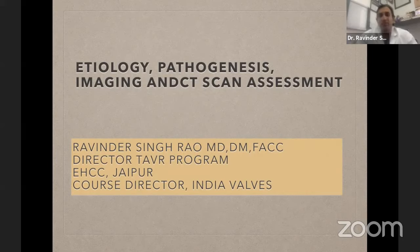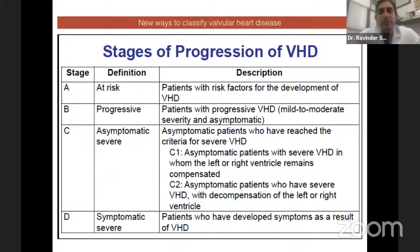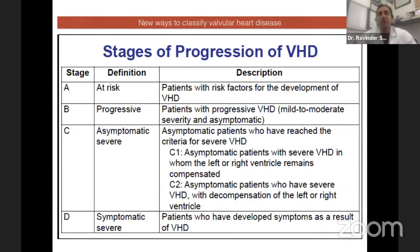There is Stage A, Stage B, Stage C, and Stage D. Stage A is patients who are at risk for valvular heart disease — they don't have valvular heart disease yet, but they are at risk. This includes somebody with a history of fever in childhood, exposure to chest wall radiation, smokers, males, or diabetics. These are risk factors for the development of valvular heart disease.